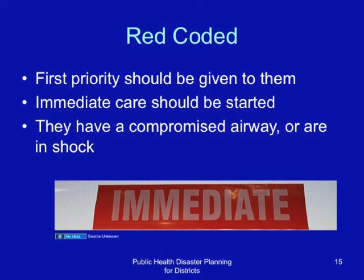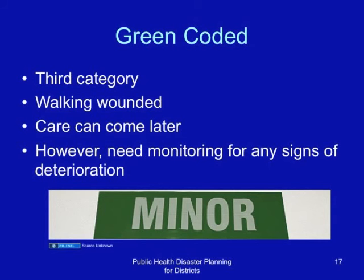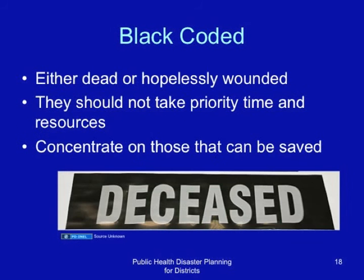Red-coded patients have a compromised airway or are in shock and need immediate resuscitation. The yellow coded are the second priority — urgent care is needed. They can deteriorate to red category in a short time and are in impending shock. The green coded are the third category and include all walking wounded. Care can come later; however, they need monitoring for any sign of deterioration.